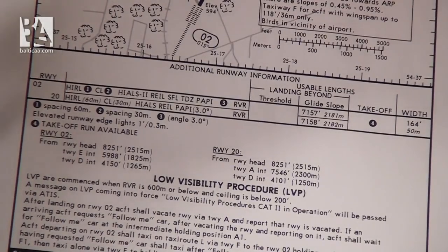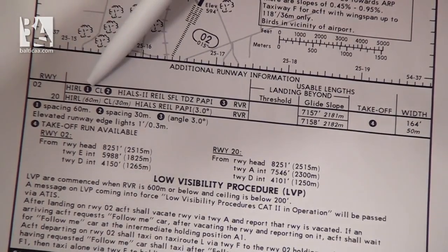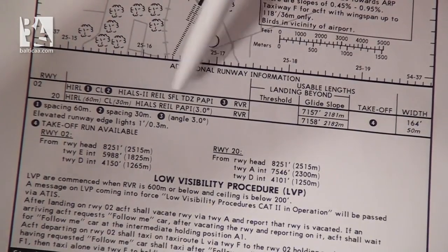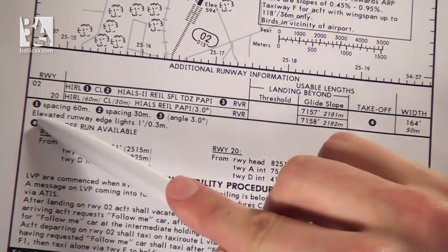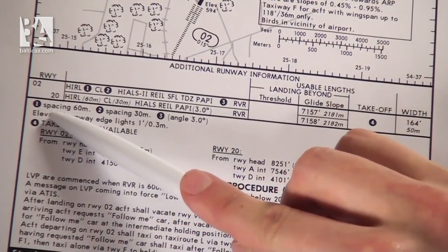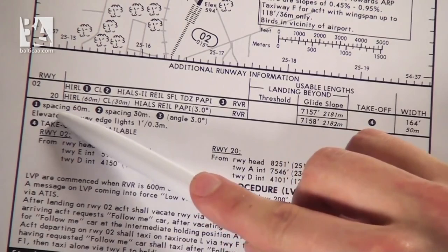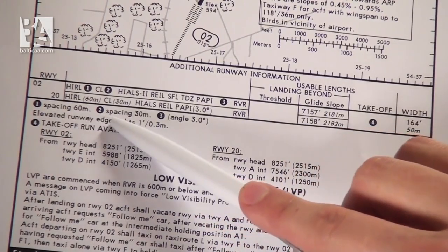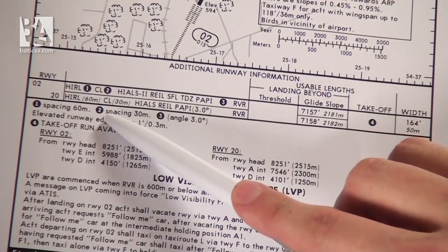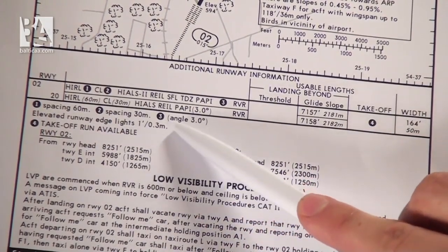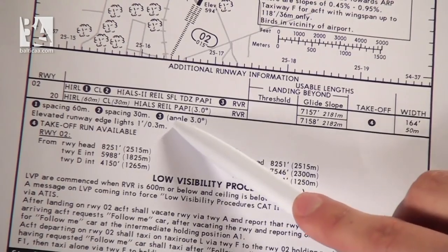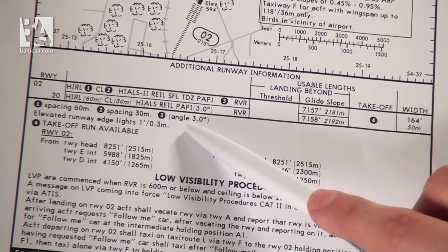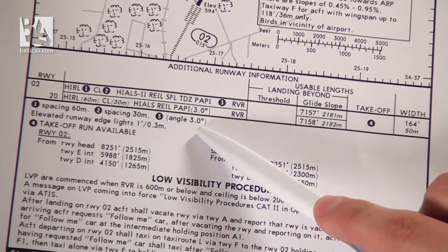You can see that there are circled numbers 1, 2 and 3, which give additional information about the lights. For example, that the high intensity runway lights have a spacing of 60 meters, or that the precision approach path indicator is angled at 3 degrees, and so on.